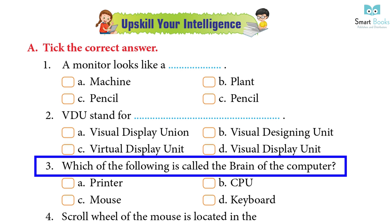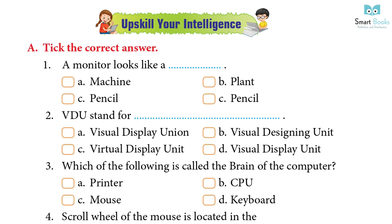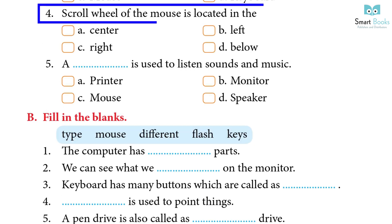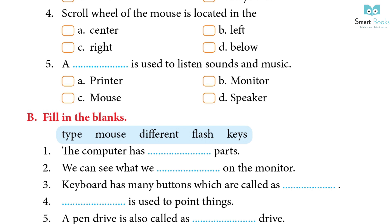Which of the following is called the brain of the computer? A) Printer, B) CPU, C) Mouse, D) Keyboard — Answer: B) CPU. The scroll wheel of the mouse is located in the: A) Center, B) Left, C) Right, D) Below — Answer: A) Center.